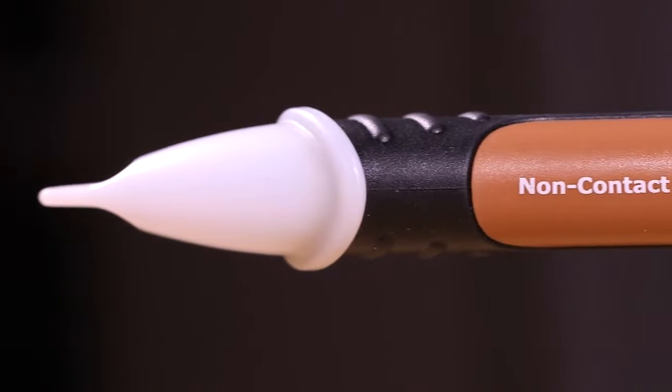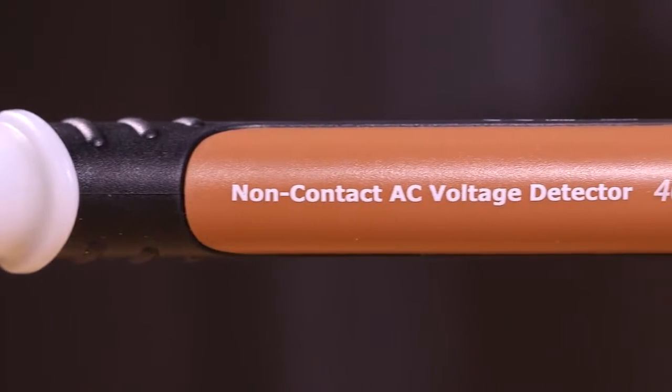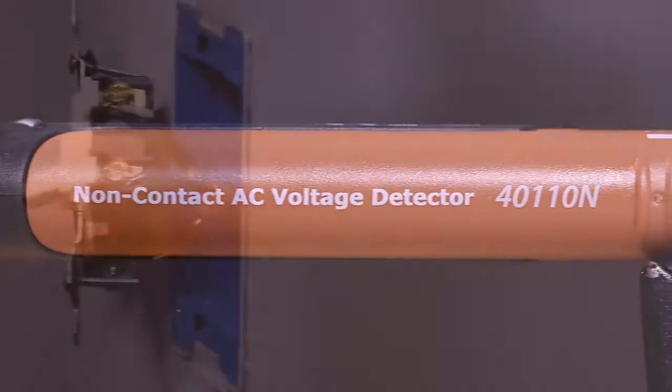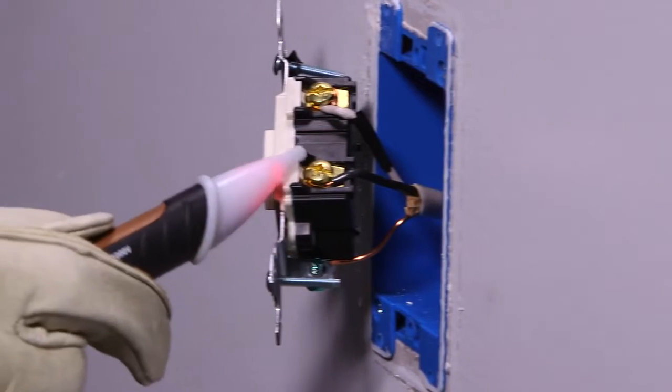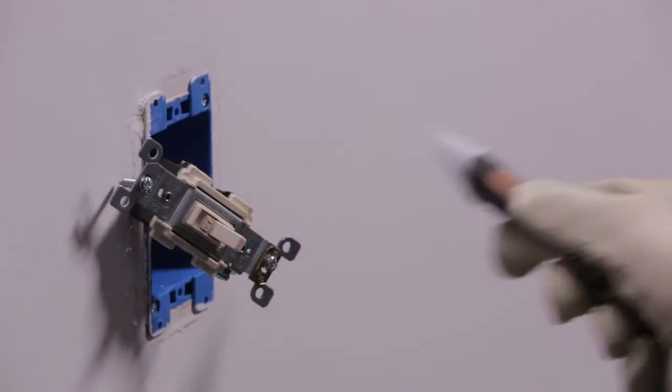The 40110N non-contact AC voltage detector provides an easy way to check for live voltage. An LED will glow and a beeper will sound when the insulated tip touches energized wires and devices.